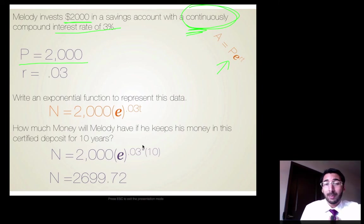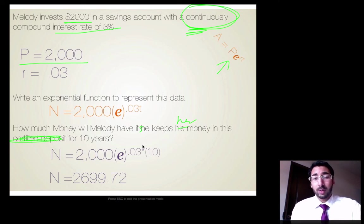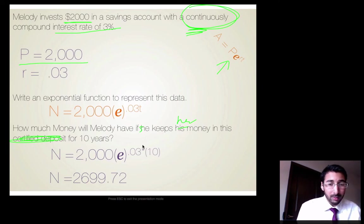And our next question is going to help us fill in that T. It says, how much money will Melody have if she keeps her money in this savings account for 10 years? So let's look at the setup of this problem. We have 2,000 times E to the .03 multiplied by 10. So in my calculator, I'm just going to type this in. And I need to get my E key, so you're going to press that second division key. And then raise that to .03 times 10.